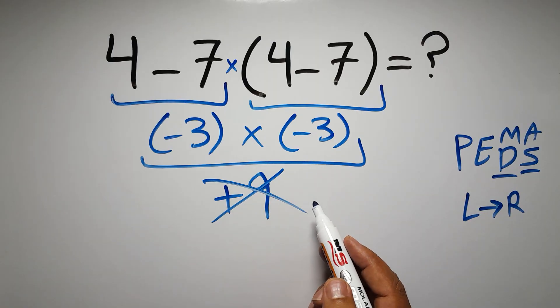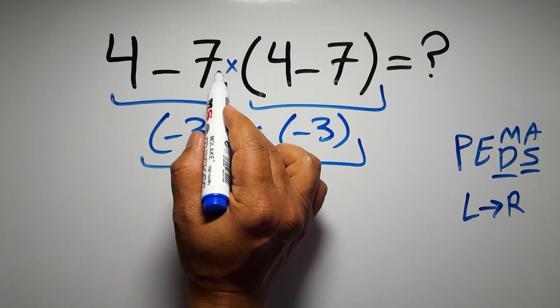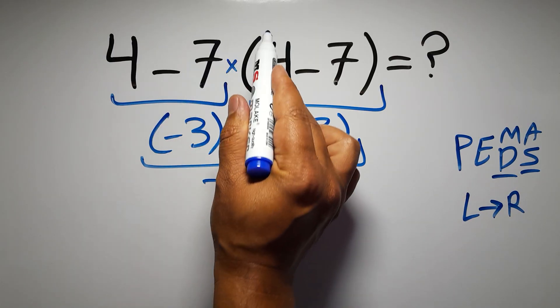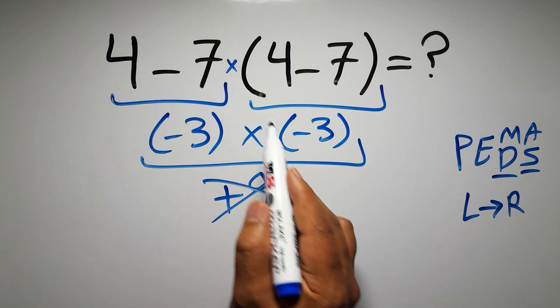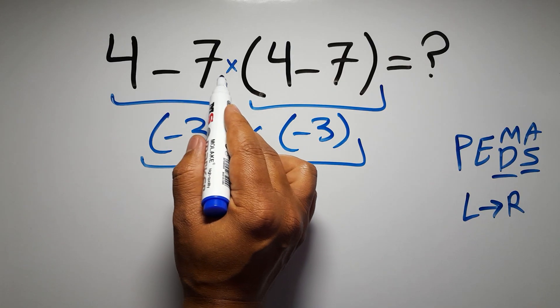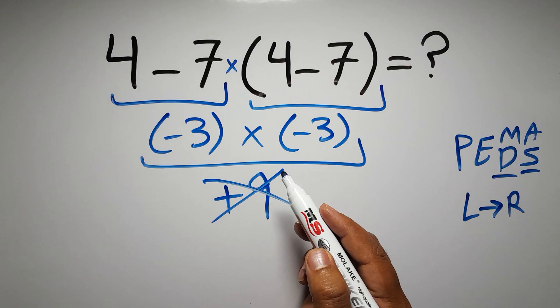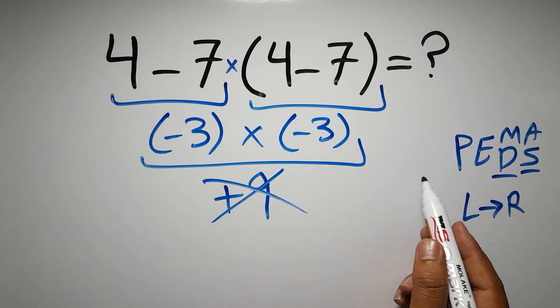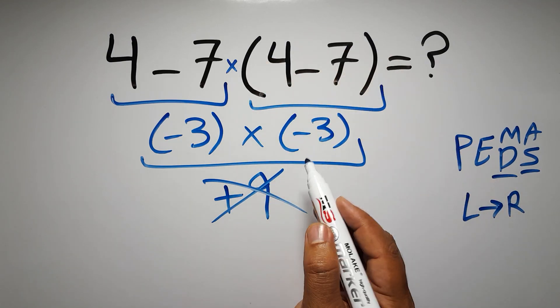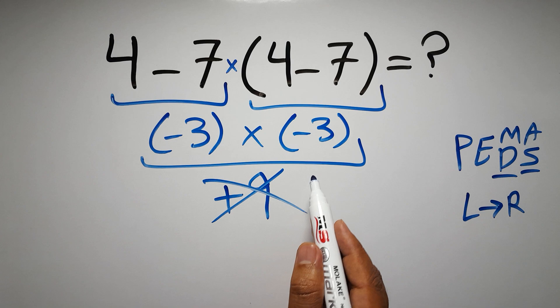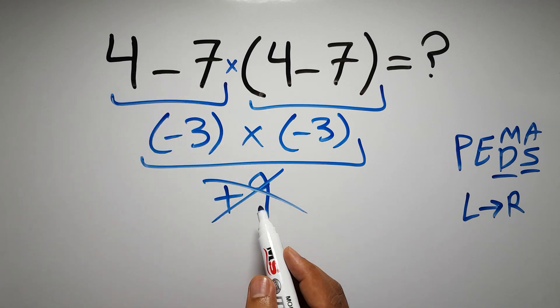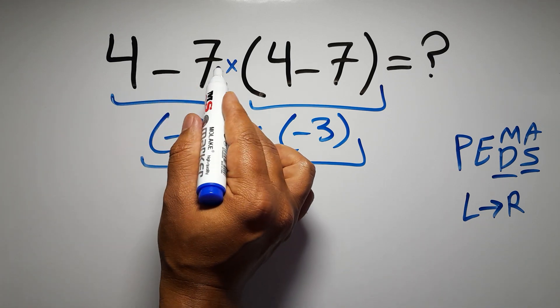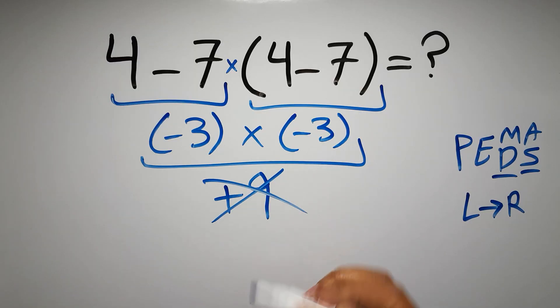Here we have a multiplication because in mathematics when a number is placed next to parentheses it means multiplication, and we usually don't write the multiplication sign for brevity. According to PEMDAS, first we have to do this parentheses, then this multiplication, and finally this subtraction. If we do this subtraction before this multiplication or this parentheses, it is wrong.